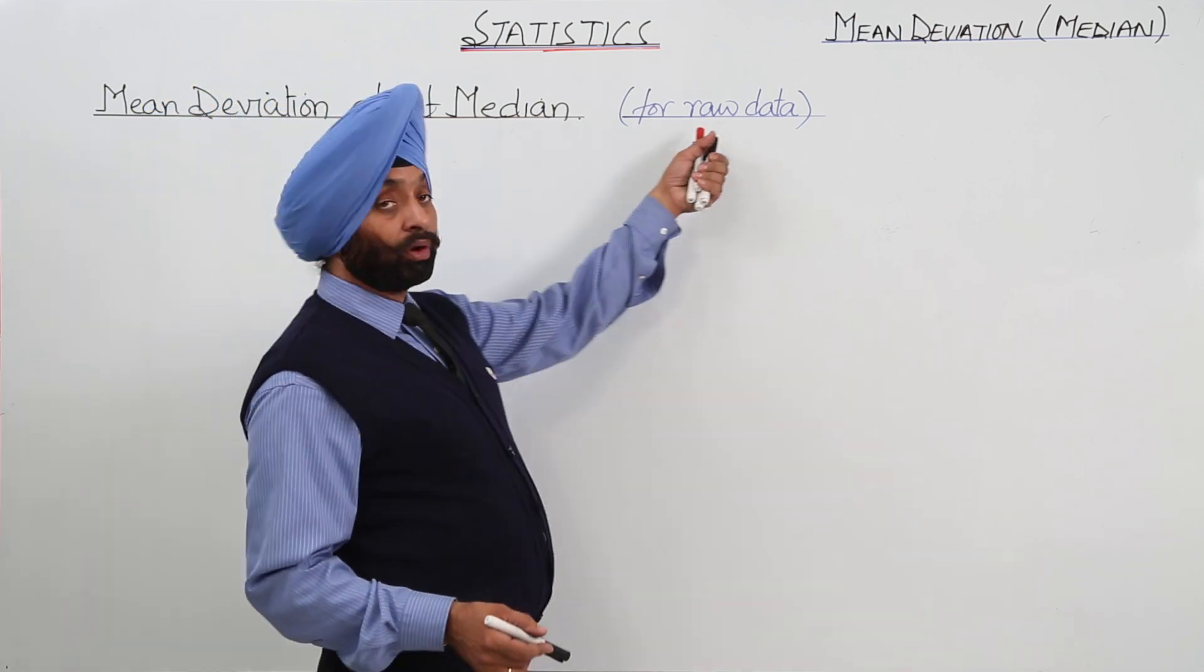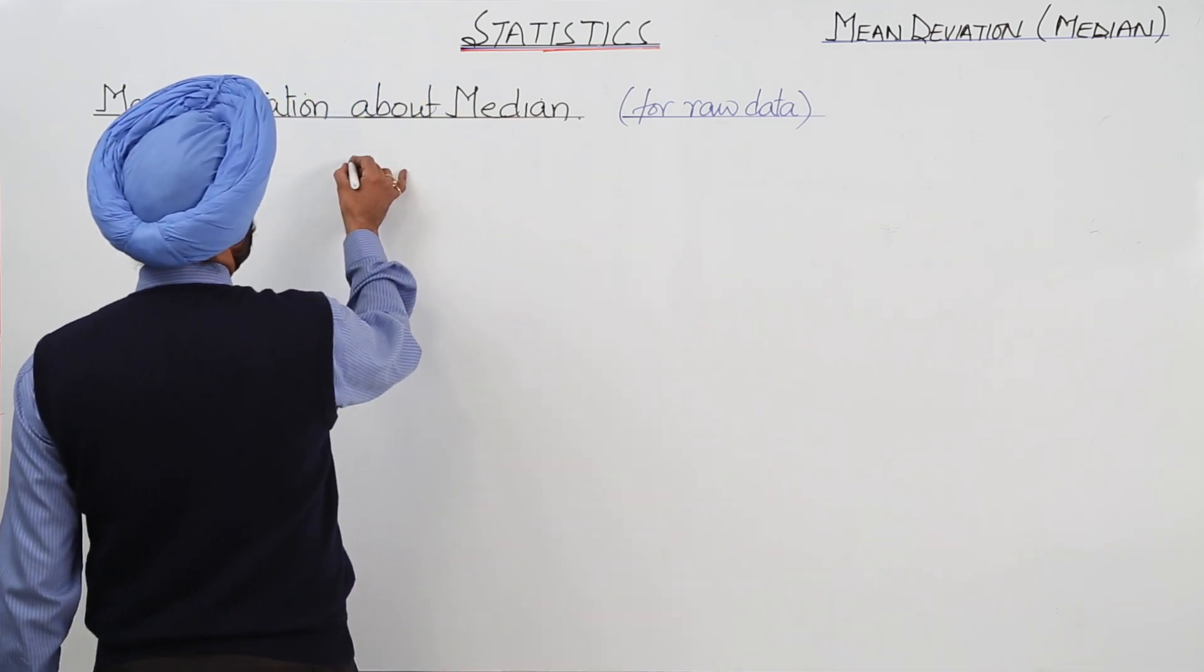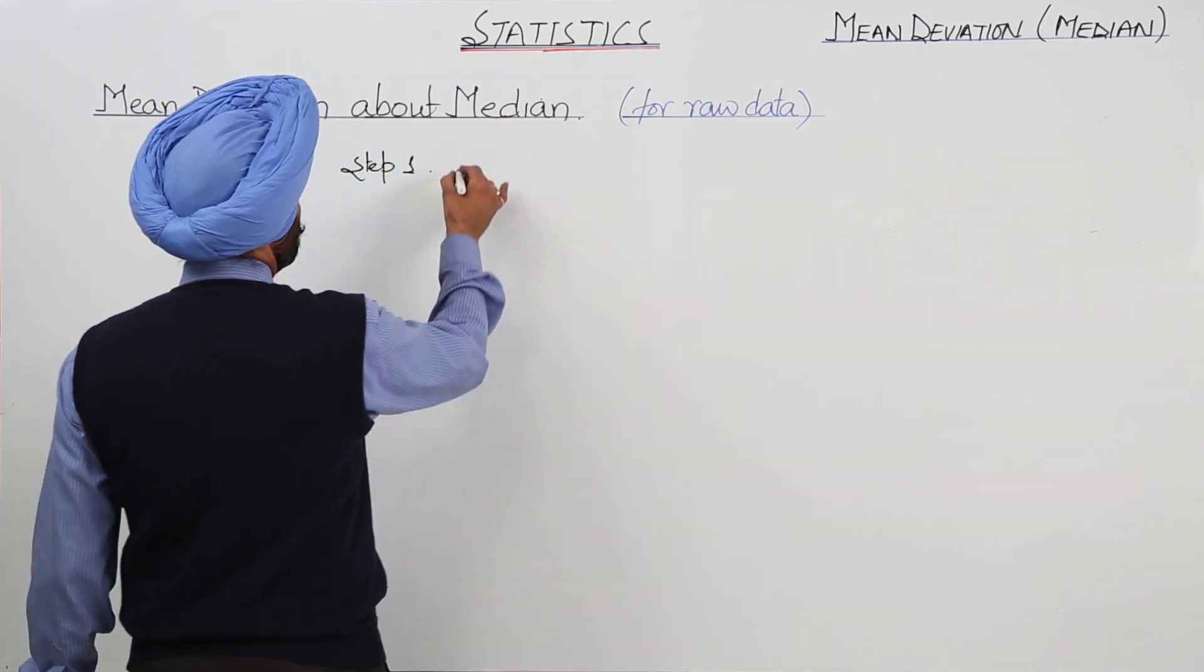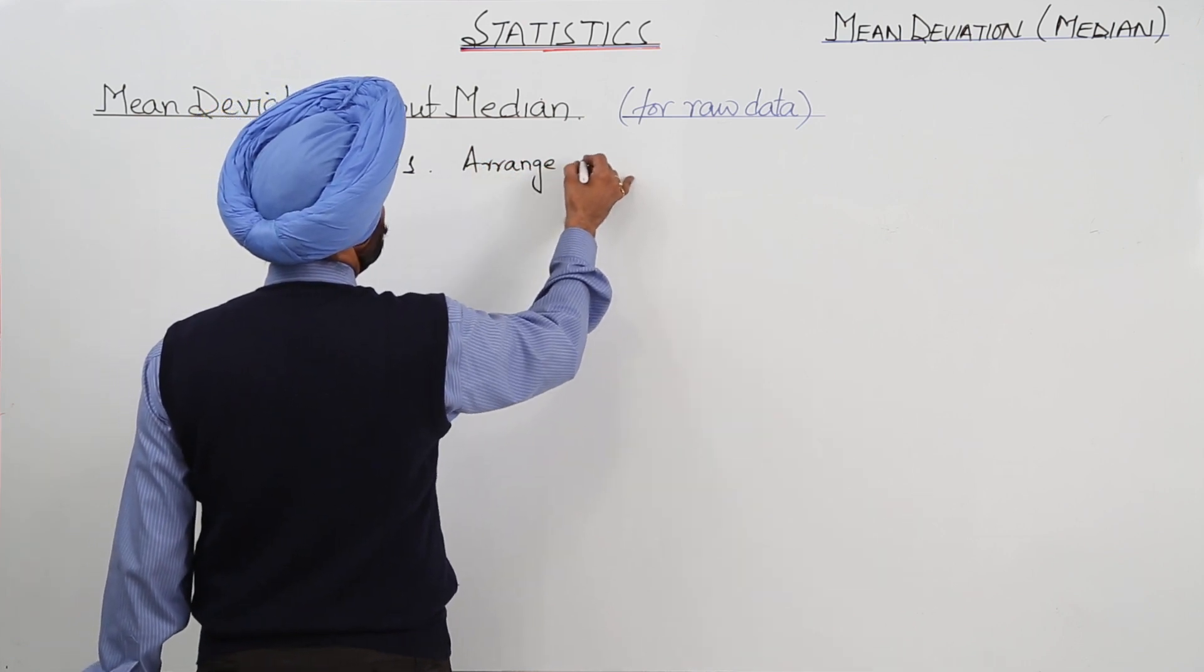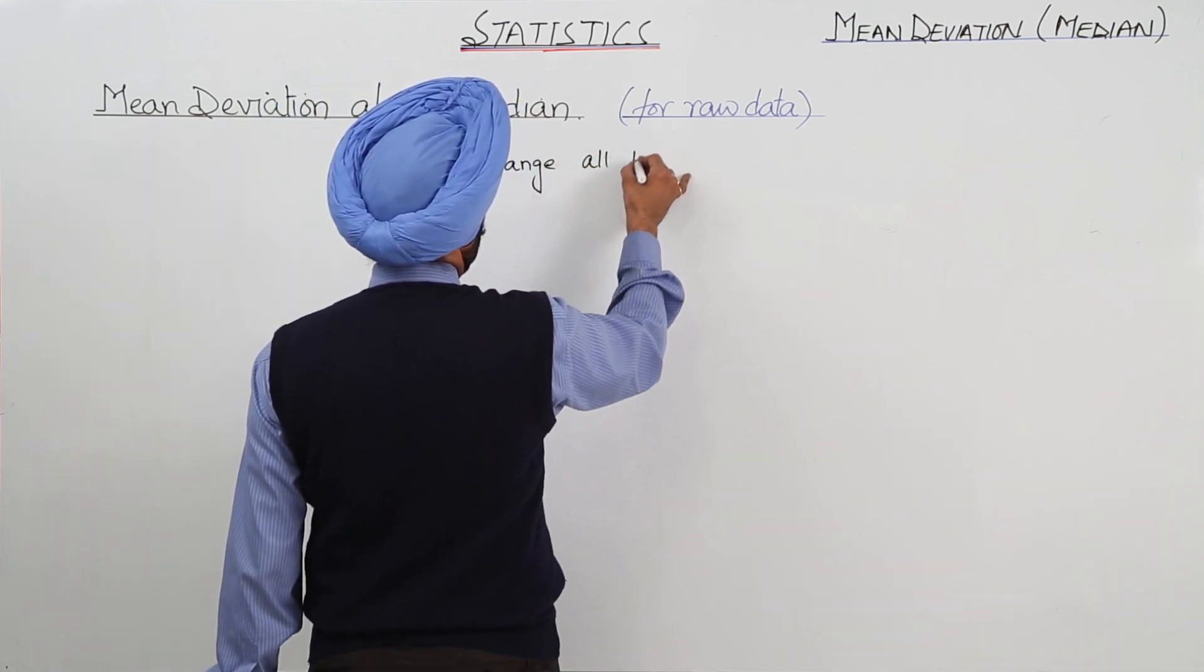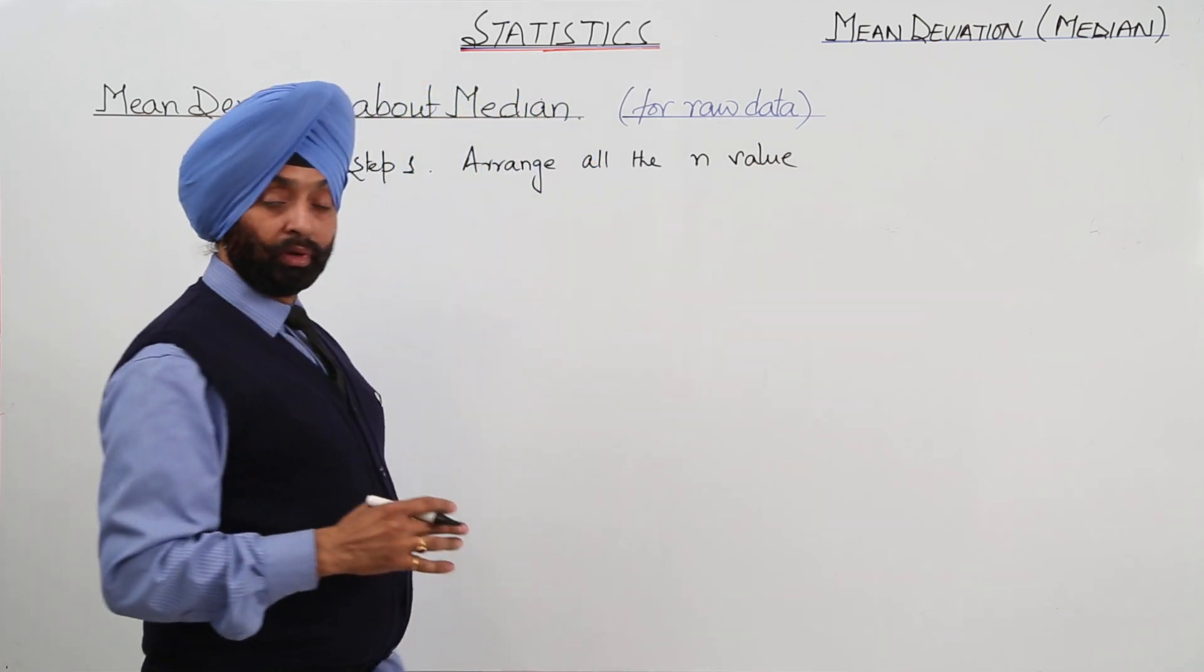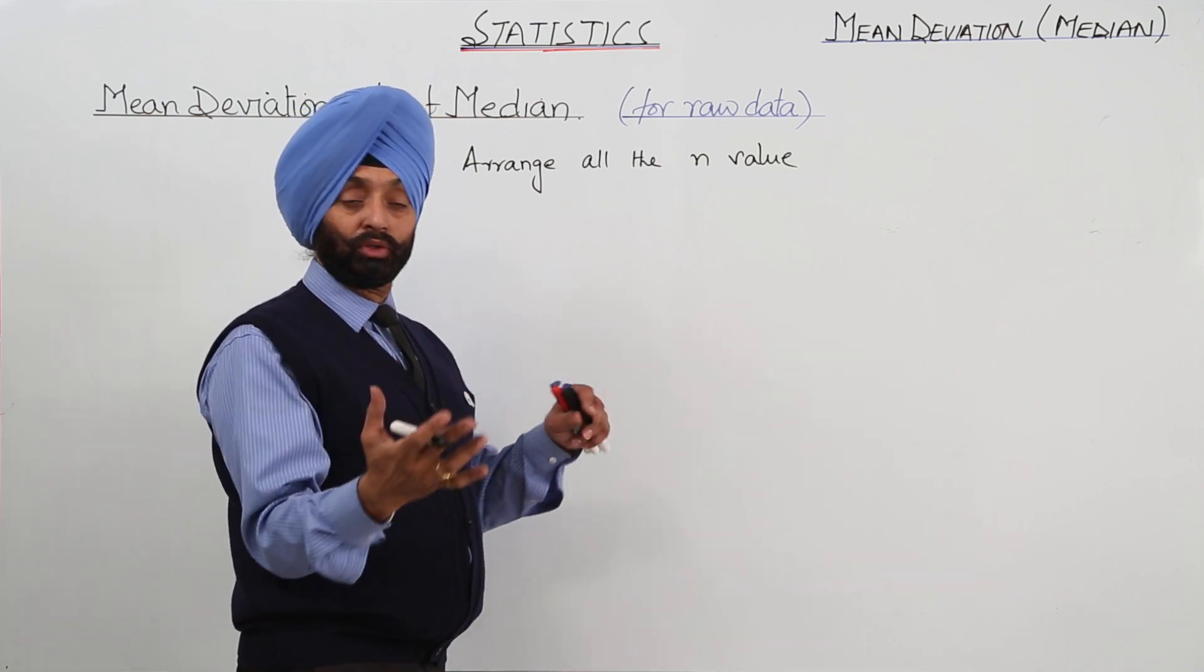Number one, first thing is I have written for raw data. Step number one for the raw data: arrange all the n values. Raw data will be given. What we have to do? First of all, we have to arrange all the values in ascending order or descending order.